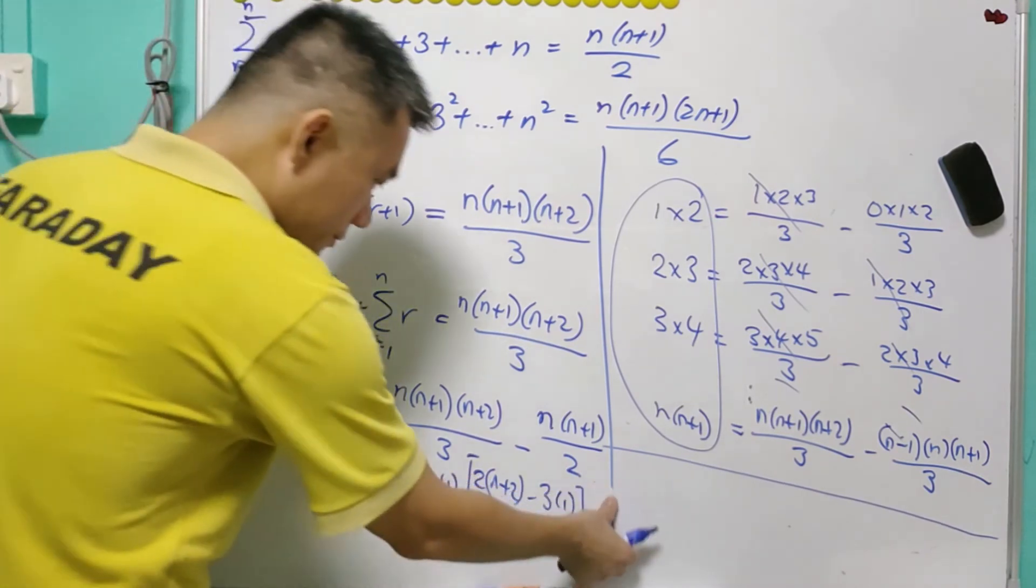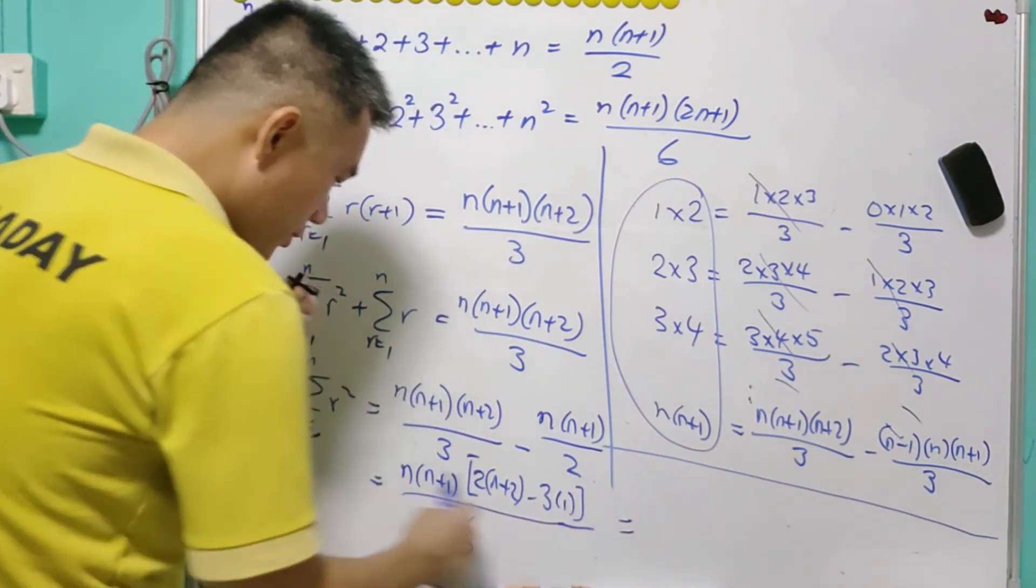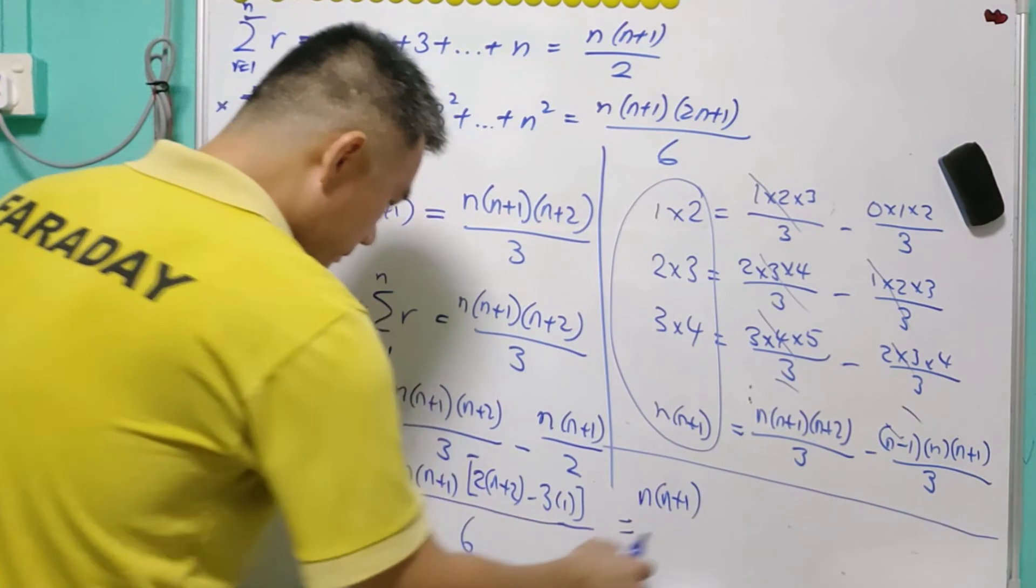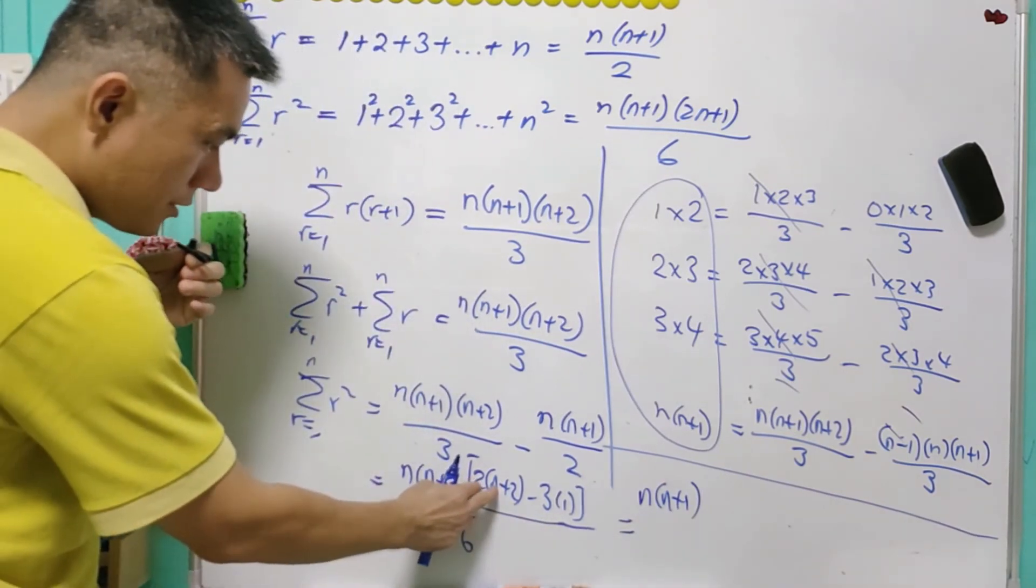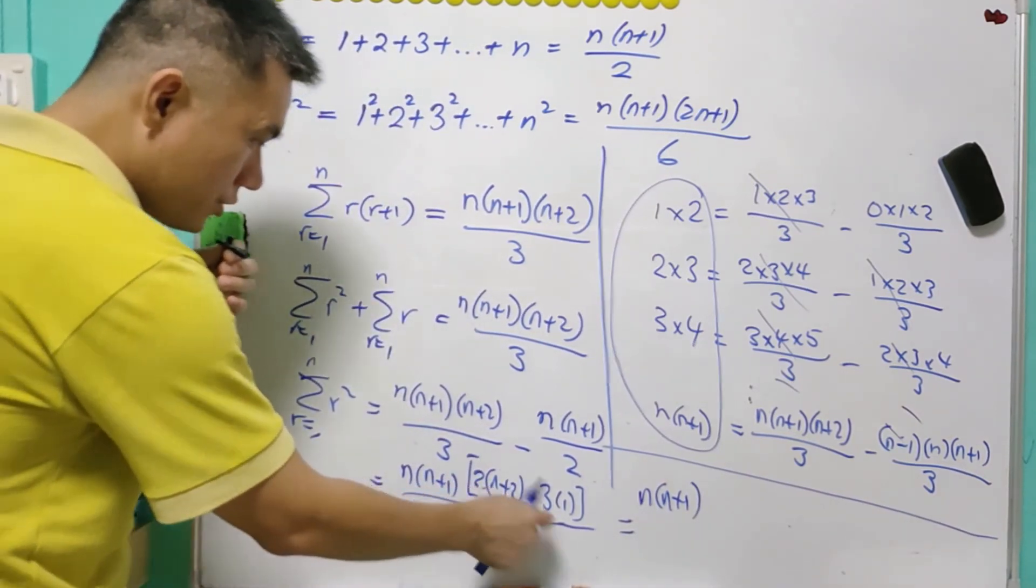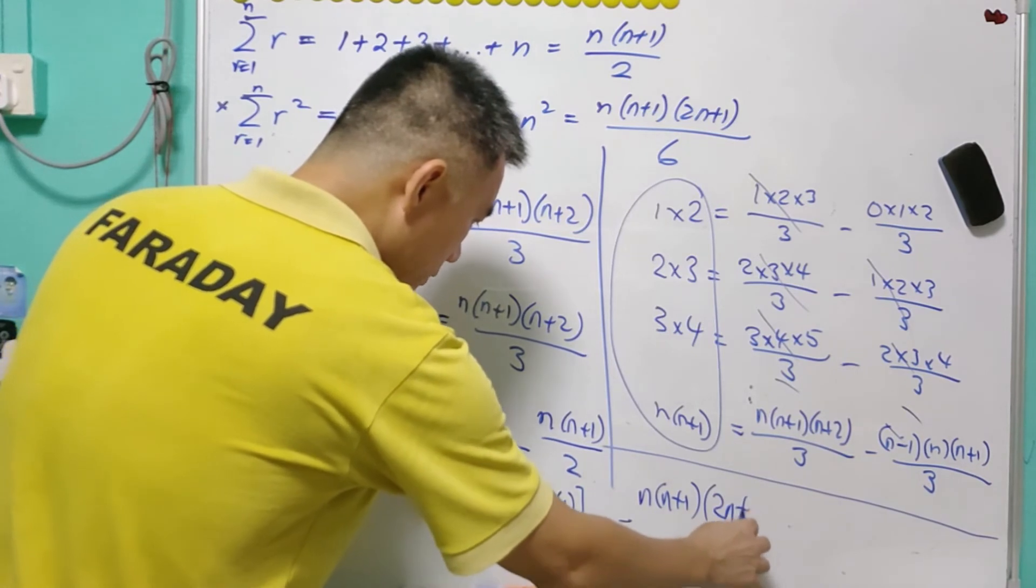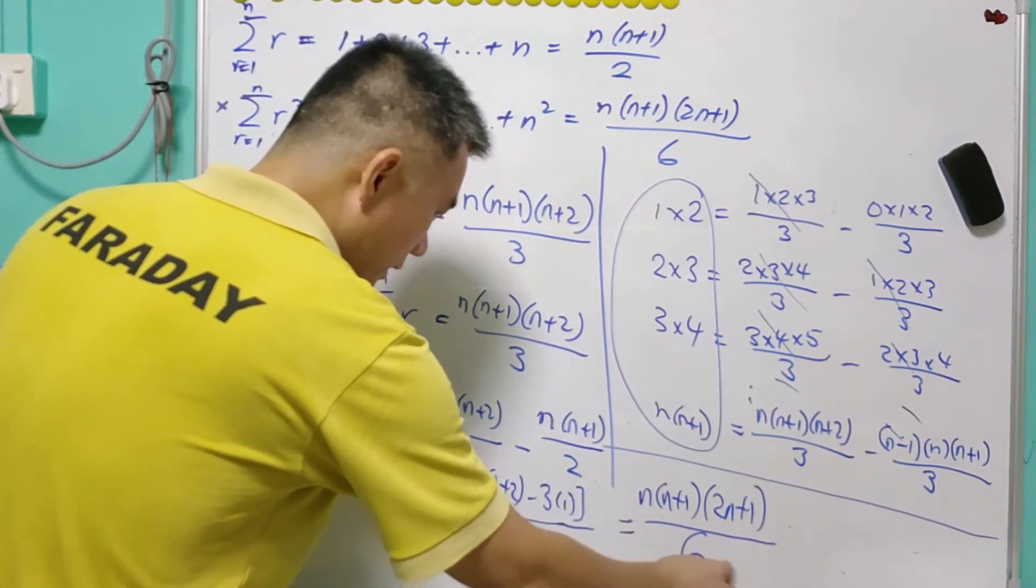And that's right, the answer will be equal to n(n+1). And this is 2n+4 minus 3 so it is 2n+1 then over 6.